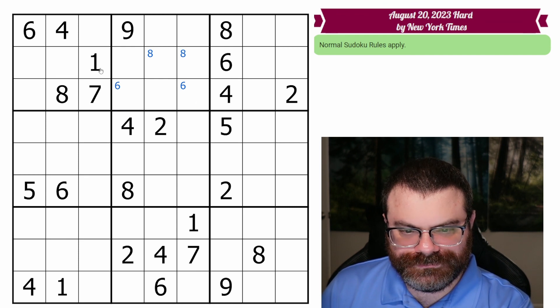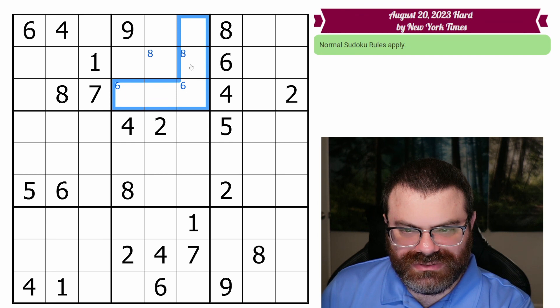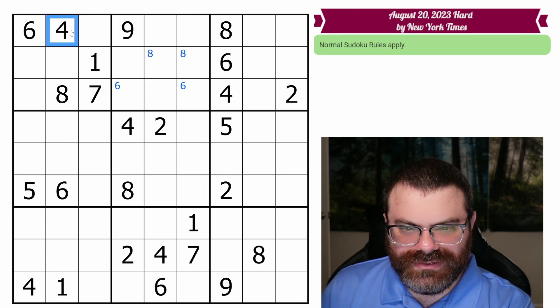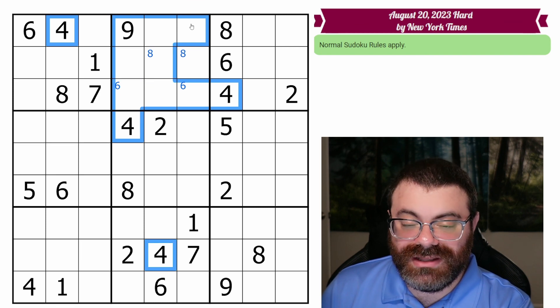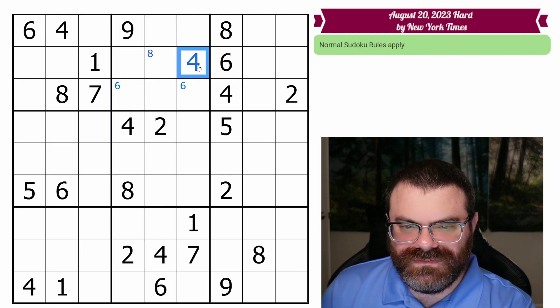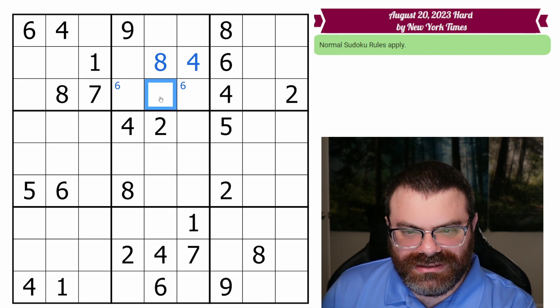What else? Sevens don't do a whole lot. Fours? So we have these fours looking in, and we have these two fours looking up. Oh, that's nice. So this becomes a four, and that also gives us the eight for the box, because this can't be eight anymore.